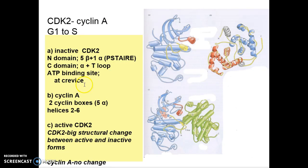We are going to look at the structural features of CDK2 and cyclin-A, which are responsible for change phase from G to S. CDK2 in inactive state has two domains: N-terminal domain with 5 beta and one alpha in red color that is called PSTAIRE, and C-terminal domain in alpha helices.